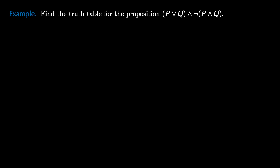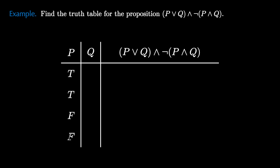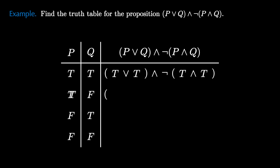Let's use the truth tables for the three primary connectives to find the truth table of a complicated molecular proposition. Let's find the truth table for the proposition P OR Q AND NOT the quantity P AND Q. For this truth table, there will again be two columns for the atomic propositions and one column for the molecular proposition. The four rows correspond to the four different possible truth value scenarios for P and Q. Then we will go through row by row and apply the elementary truth table operations for AND, NOT, and OR.